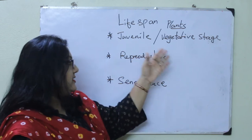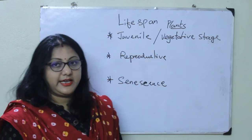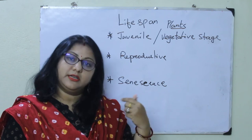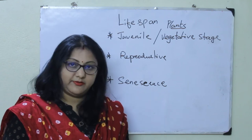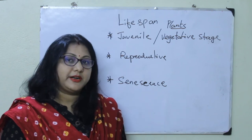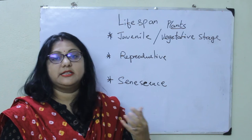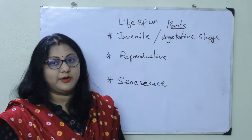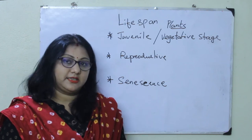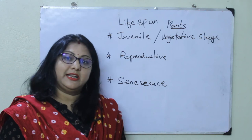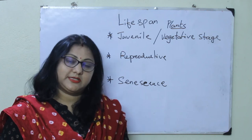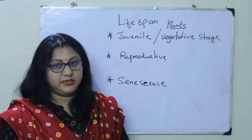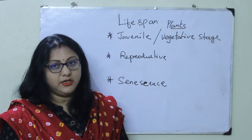During the vegetative stage, the plant prepares itself for the reproductive phase. During the reproductive phase, flowering starts. Then after the flowering period is over, fruits are formed, seeds are formed, and then it enters into senescence and finally ends with the death of the plant.